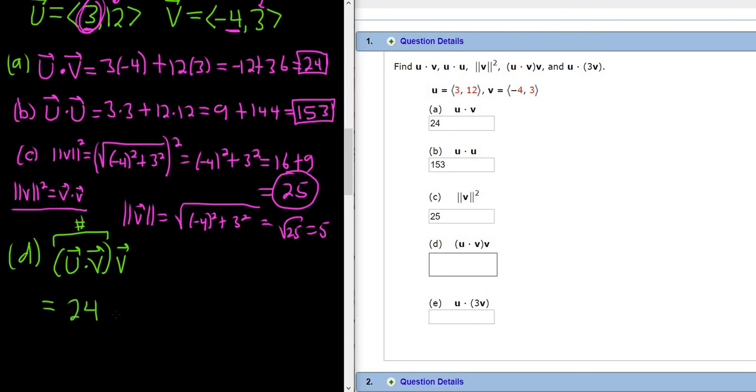Let me go ahead and write down v here. Remember, that was from part a. So v is negative 4, comma, 3.